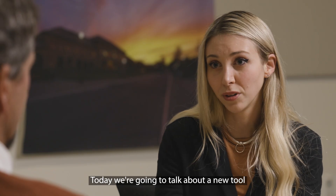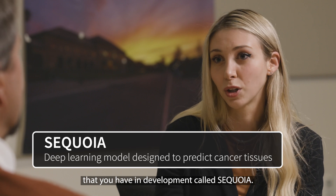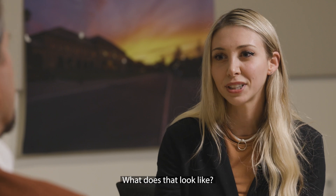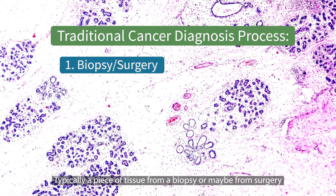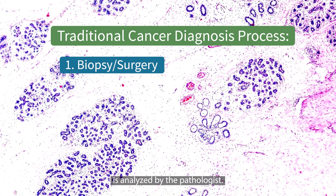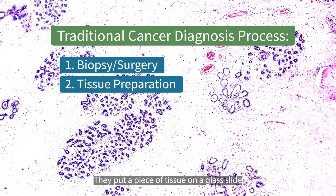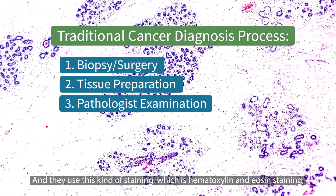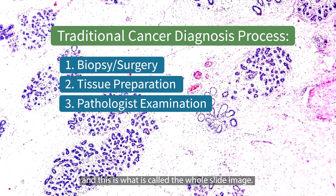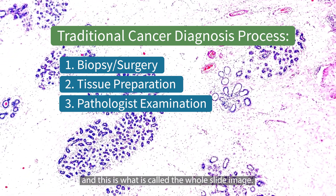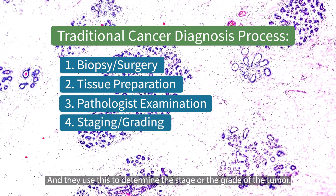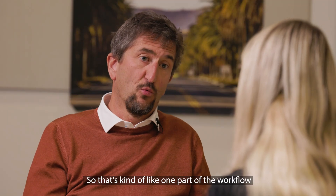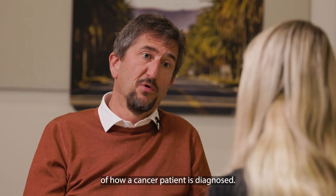Today we're going to talk about a new tool that you have in development called Sequoia. But to start, I'm wondering if we could really talk about cancer diagnosis as it is right now. What does that look like? Typically, a piece of tissue from a biopsy or maybe from surgery is analyzed by the pathologist. They put a piece of tissue on a glass slide and they look at it under a microscope, using hematoxylin and eosin staining to look at the cells and the tissues. This is what is called a whole slide image, and they use this to determine the stage or the grade of the tumor, which essentially determines subsequent treatment of the patient.